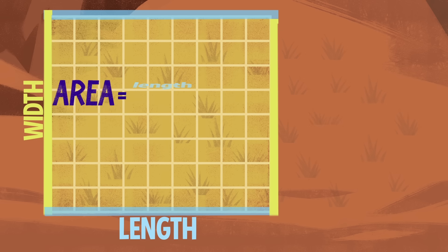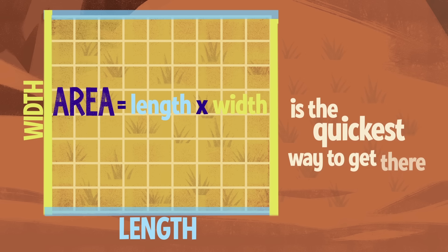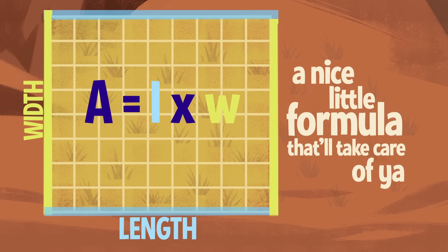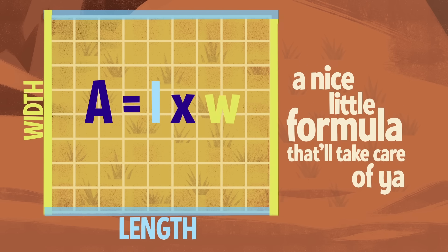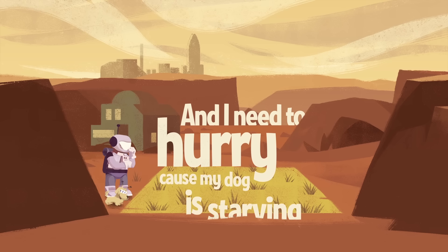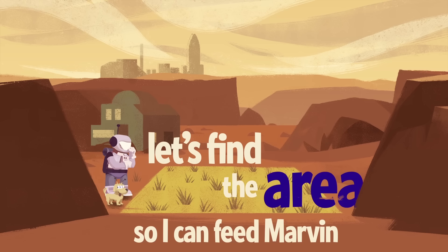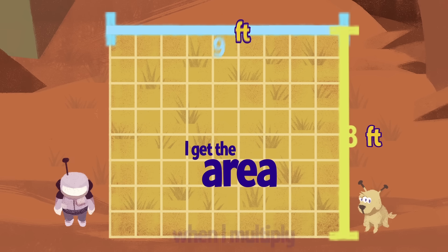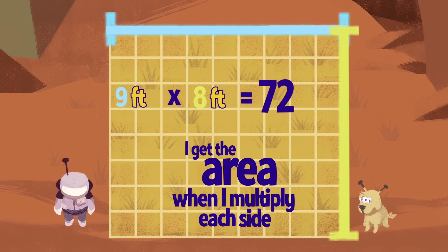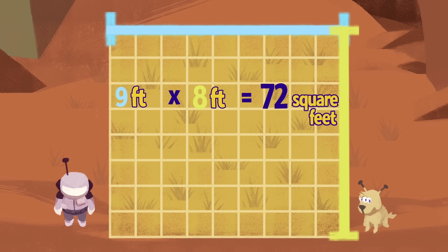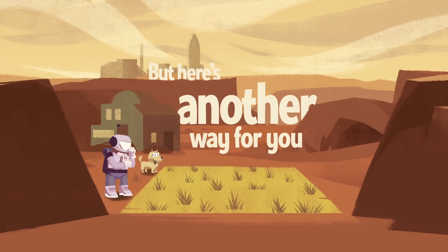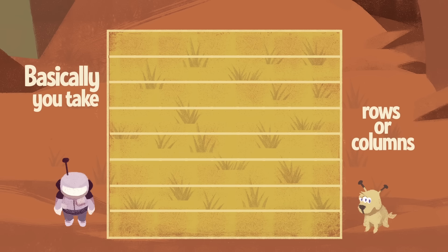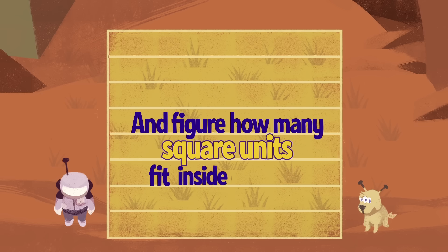But who has time to count squares? Length times width is the quickest way to get there. That's how you find the area — a nice little formula that'll take care of ya. My yard is 9 feet long by 8 feet wide. I get the area when I multiply each side, and 9 times 8 is 72.